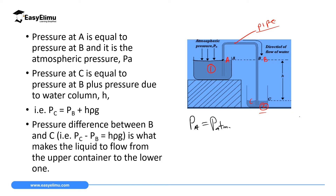Now, a particle at point B will also experience equal pressure as the particle at A. The reason is that particles A and B are at the same height, and we say particles at the same height receive equal pressures. So pressure at A is equal to pressure at B, and it is the same as atmospheric pressure.